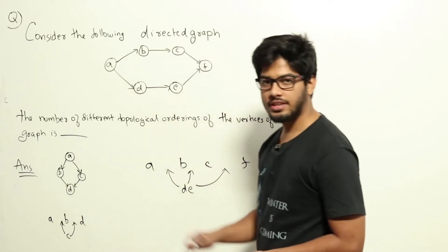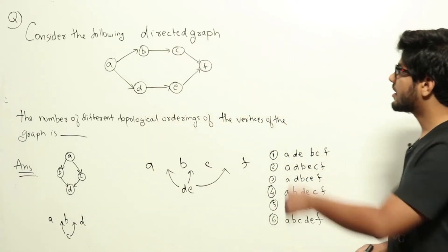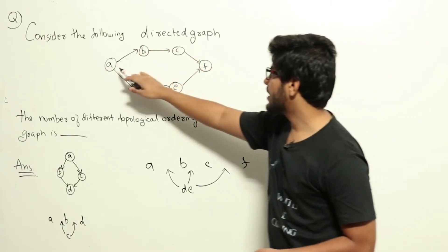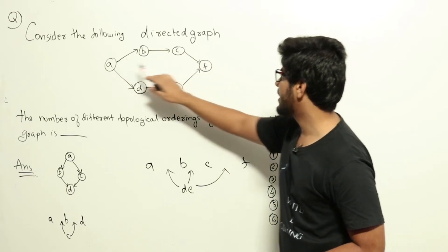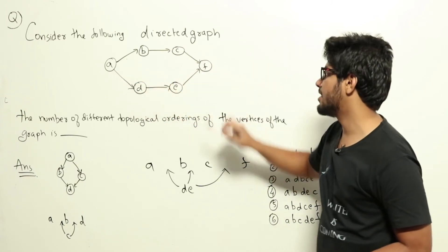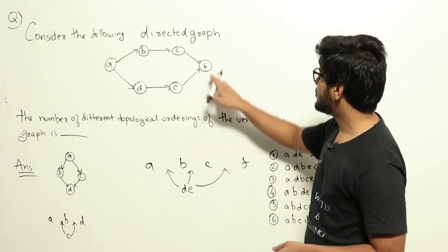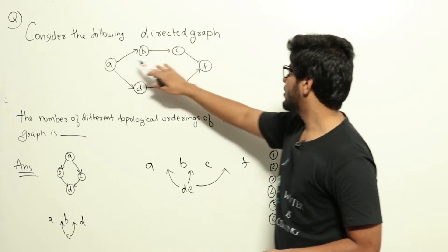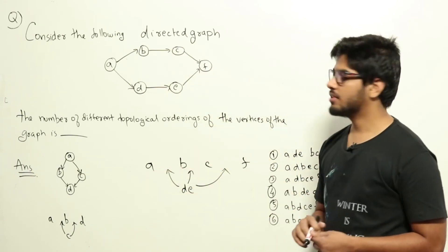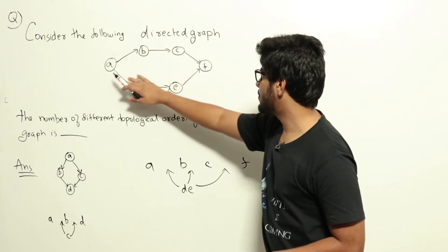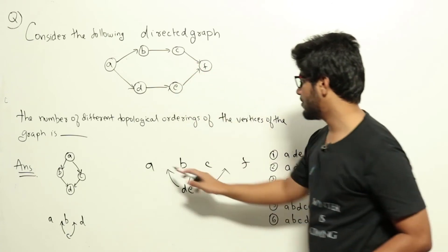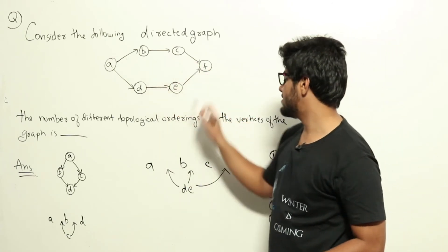Now let's look at the actual question. A should appear before B, B before C, and C before F, meaning A appears before all nodes in this chain. Similarly, F should appear last, with all other nodes coming before it. So we can fix A and F at the start and end. For B and C, the only relation is B after A, C after B, and C before F — so the only ordering for A, B, C, F is fixed.